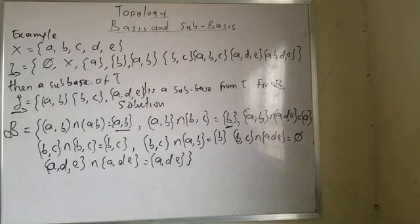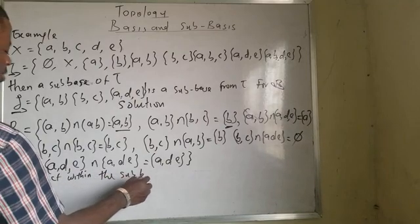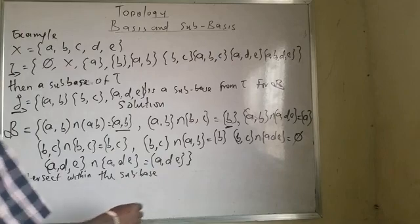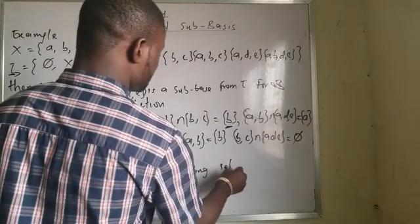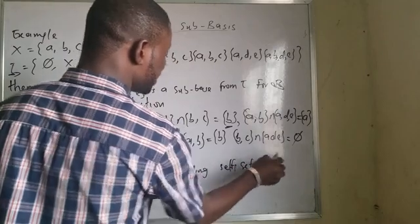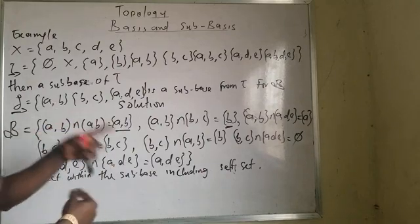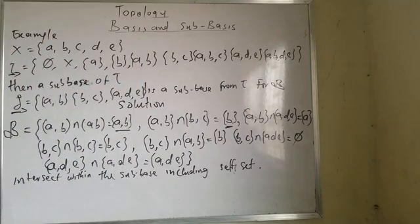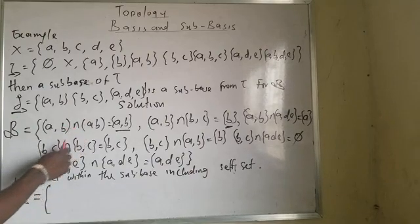Now what I will now do is that the basis, which is what I need, it means intersection within the sub-basis, including self-sets. Don't mind my English. Including self-sets. It means like the way I intersect this with himself, can you see, that is how I will be doing that to generate my base. It means my base will be equals to what I have.